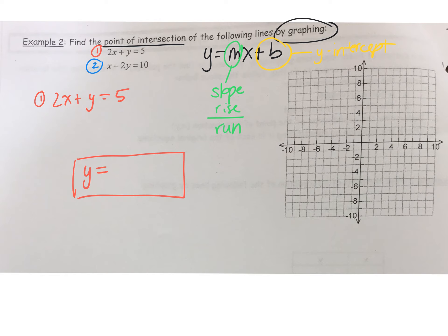Once it's in that form, the coefficient of x, whatever number's in front of x, will tell you the slope and the constant term. So the number that's by itself with no variable will tell you the y-intercept. Do you remember this from grade 9? Okay, so let's rearrange this.